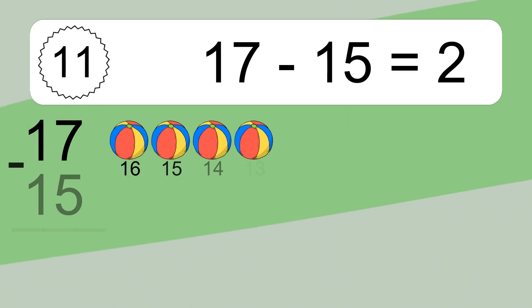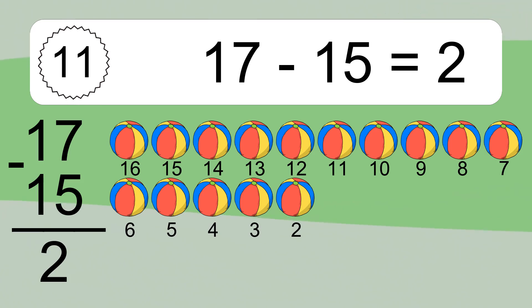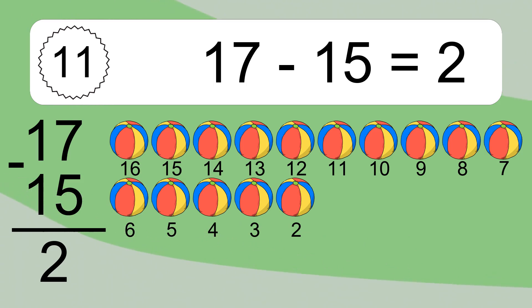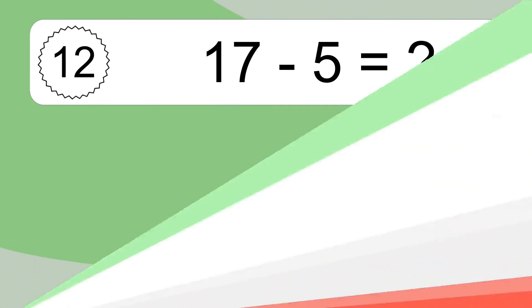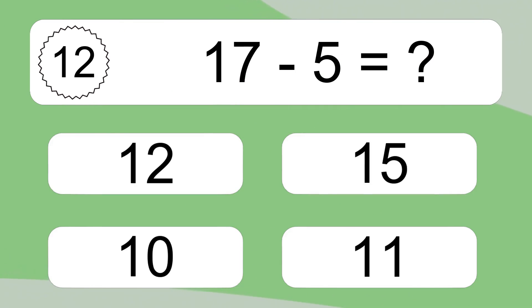17 minus 15 equals 2. Let's count it: 16, 15, 14, 13, 12, 11, 10, 9, 8, 7, 6, 5, 4, 3, 2. 17 minus 5 equals what?